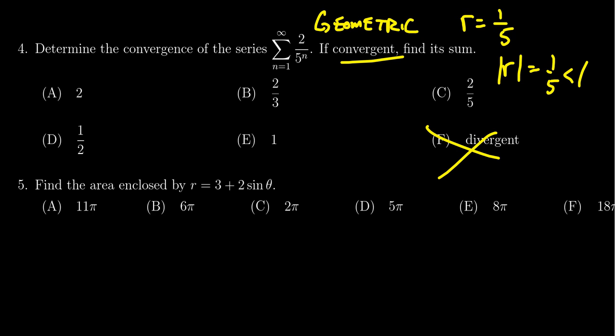We now need to compute the value. So given this geometric series, 2 over 5 to the n, the formula we have is that on the top, you're going to get the very first term of the sequence. So if you plug 1 into the sequence there, you're going to get two fifths. That's the first term of the sum.